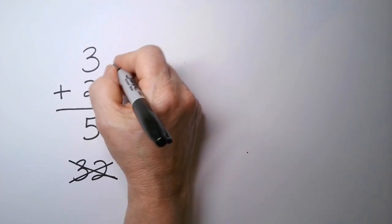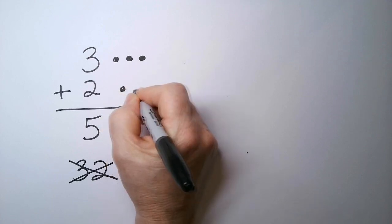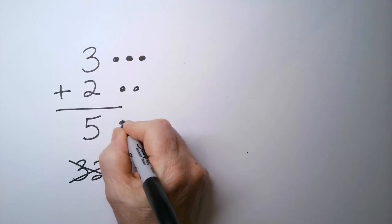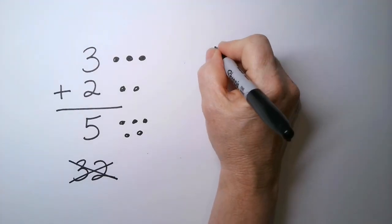So the number 3 represents 3 of something. So we counted 3, 3 marbles. 2 means 2 marbles. We're going to add them together and together we have 5 marbles. Let's try it with a different example.